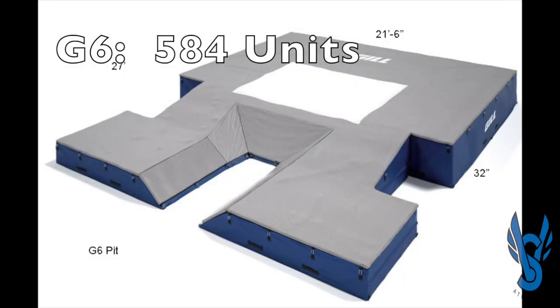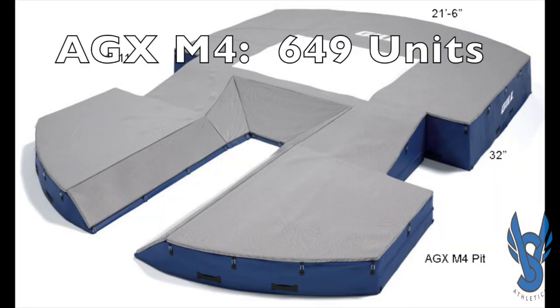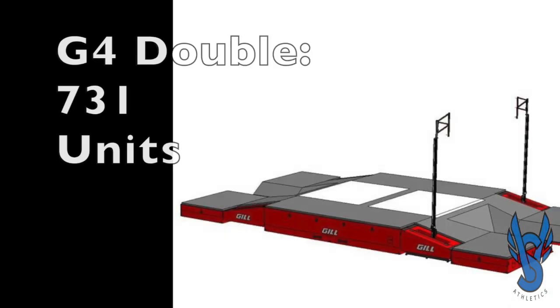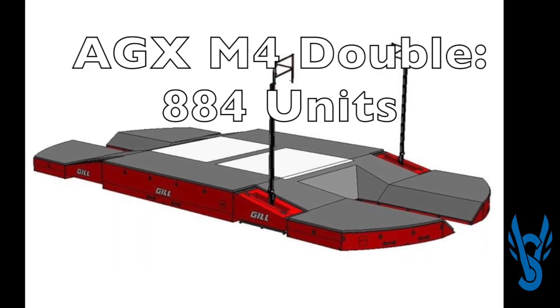For the G6, 584 units. For the AGX M4, also known as the Maximus, 649 units. And for the G4, G6, and Maximus Doubles: 731, 800, and 884 respectively.